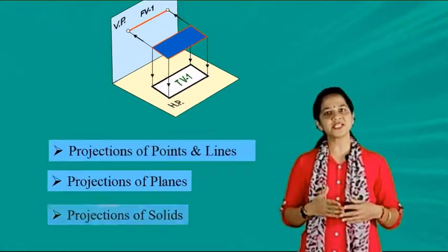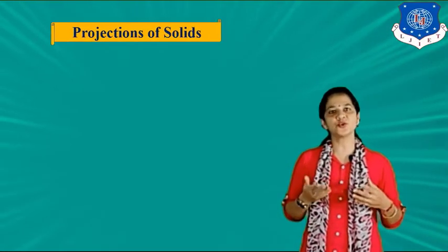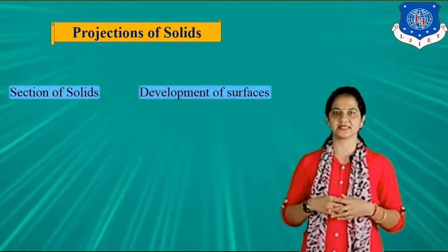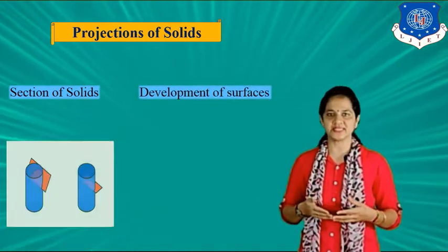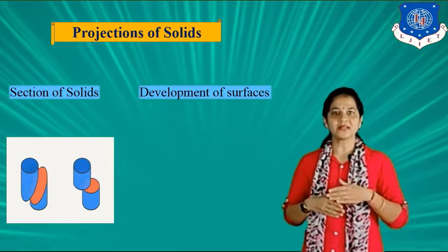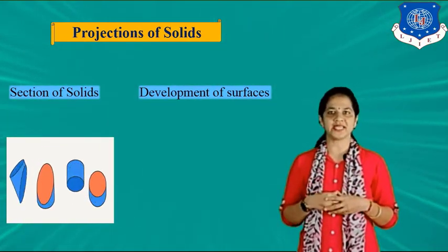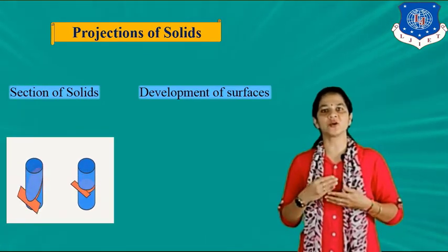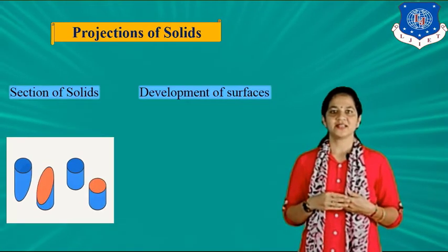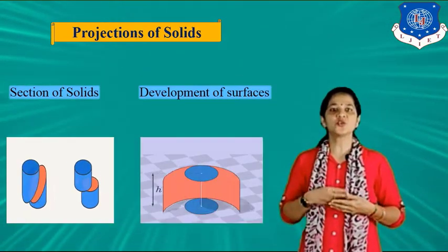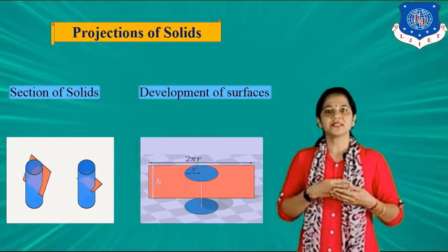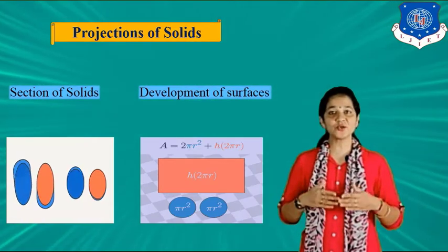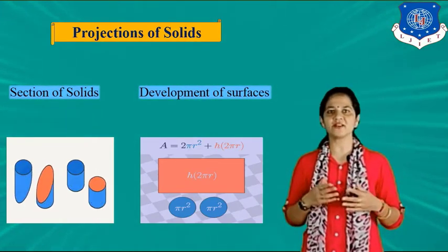Now projection of solid is further divided into two parts: section of solid and development of surfaces. Section of solid means to take the section of an object by the cutting plane to observe internal parts of the object. Development of surfaces means to unfold or unroll the solid object. It is used where sheet metal work is required.